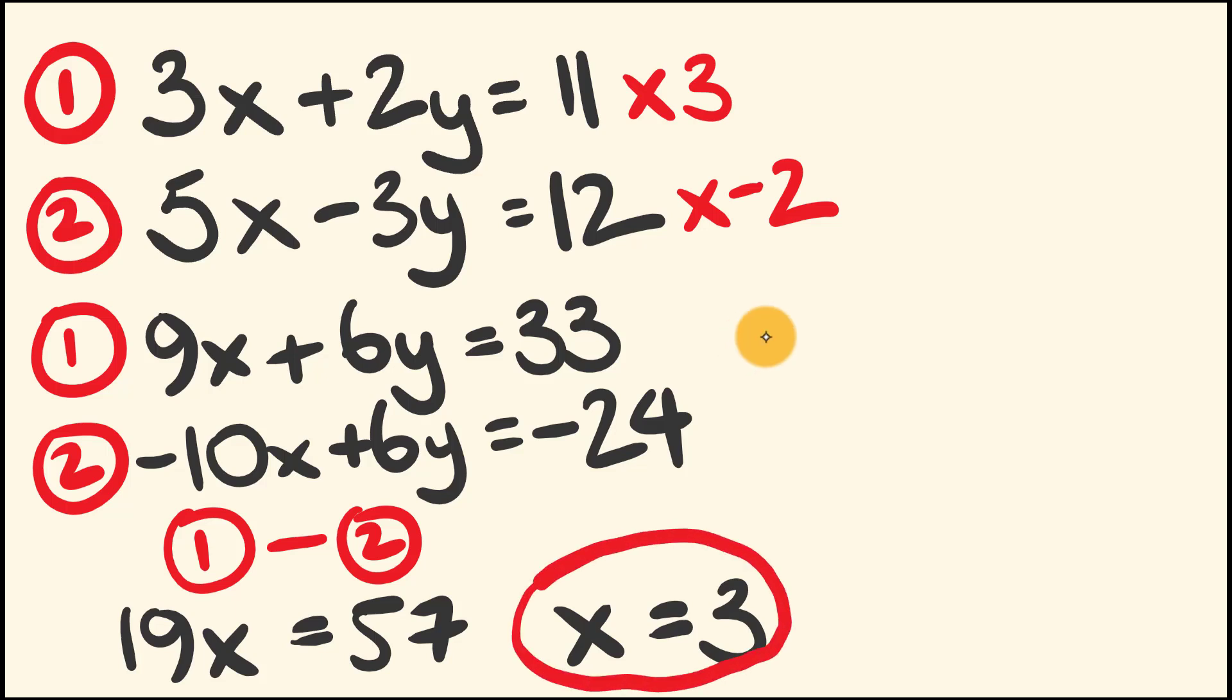That's our first part. Now, we're going to solve for y by substituting x into our equations up here. I'm going to rub out up here just to create a bit of space. And I'm not going to rewrite the equations out. I'm just going to substitute straight into these equations right here. So, we have 3x plus 2y equals 11. We're going to put x equals 3 into this. So, 3x and x equals 3. This is equal to 9. 9 plus 2y is equal to 11.